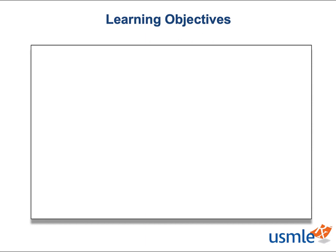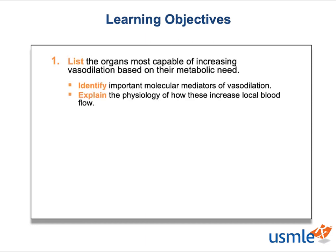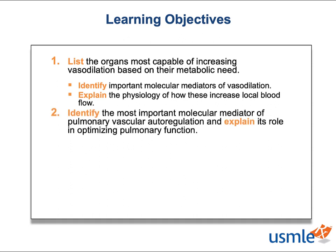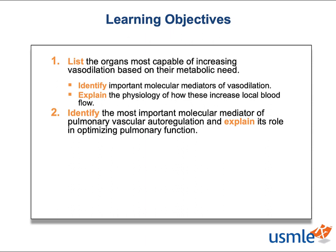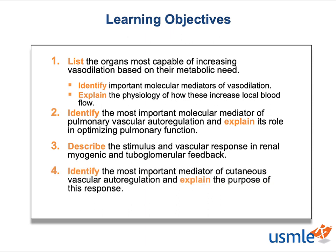By the end of this episode, you'll be able to: 1. List the organs most capable of increasing vasodilation based on their metabolic need, identify important molecular mediators of vasodilation, and explain the physiology of how these increase local blood flow. 2. Identify the most important molecular mediators of pulmonary vascular autoregulation and explain its role in optimizing pulmonary function. 3. Describe the stimulus and vascular response in the renal myogenic and tubuloglomerular feedback. 4. Identify the most important mediator of cutaneous vascular autoregulation and explain the purpose of this response.